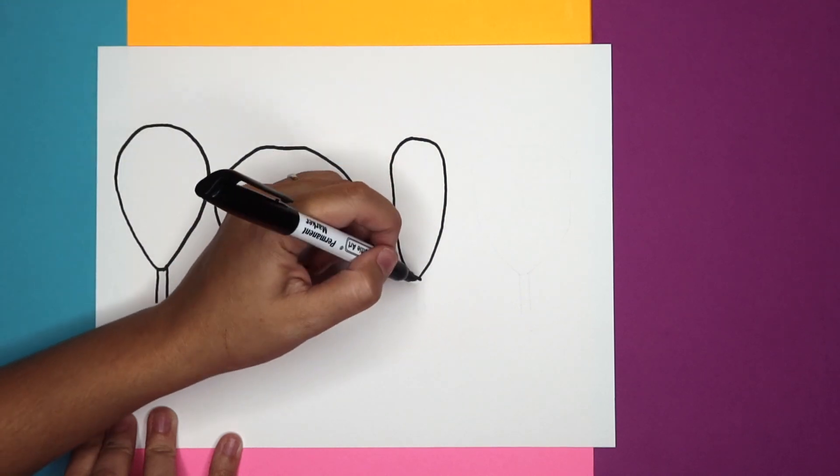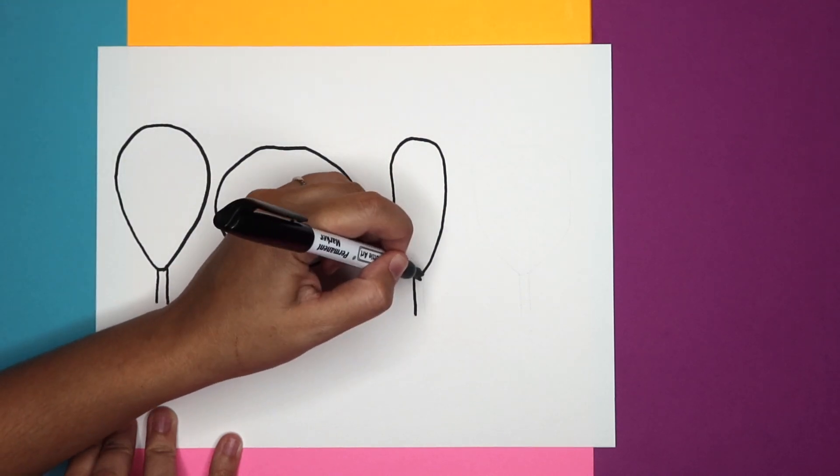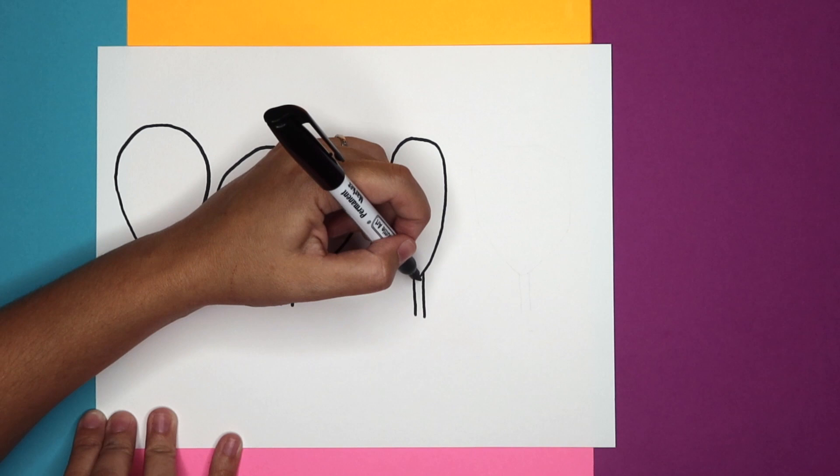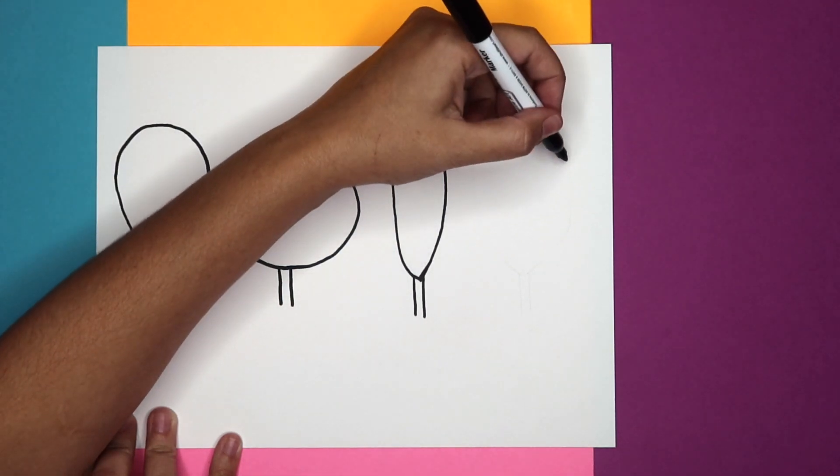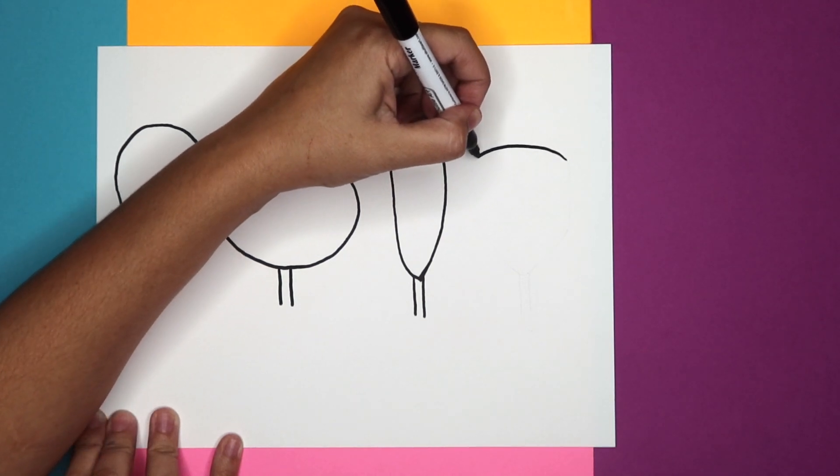The next is a pencil. I like to call it a pencil shape because it's a very thin head. So it's very similar to the first one, but it's even more narrow, like it's getting squished on the sides.